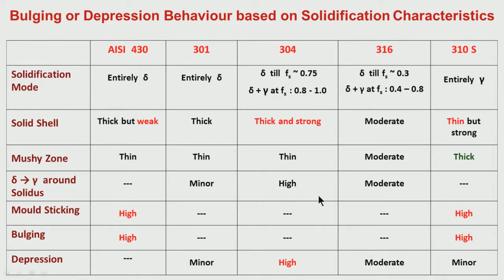For other stainless steel grades which have either very low or very high nickel equivalent to chromium equivalent — that means for the ferritic grades or the totally austenitic grades where solidification is entirely through austenitic mode — what is happening is we have sticking or bulging tendency, for different reasons.